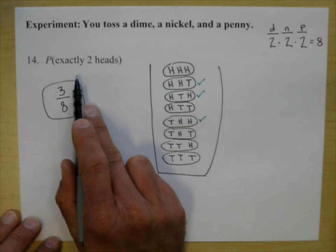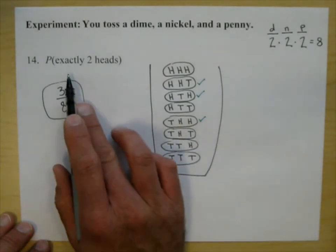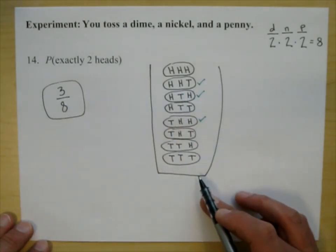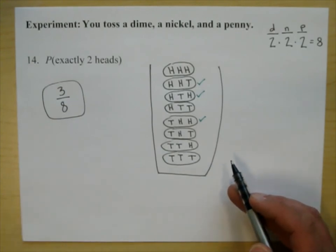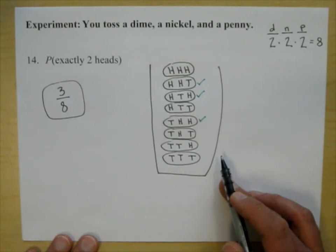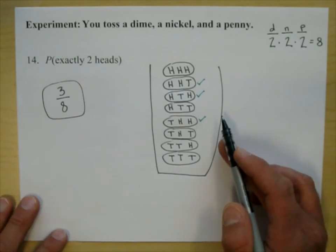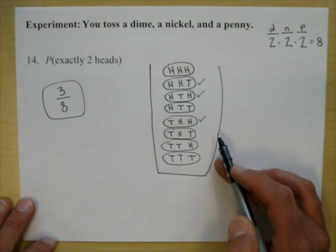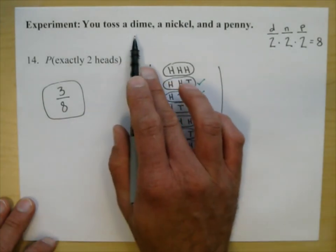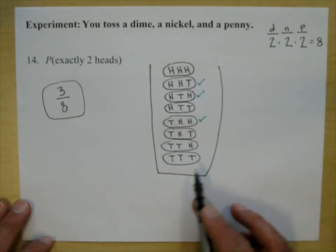Is this problem done in statistics classes? Absolutely. They would use combinations — three choose two divided by two to the third. But in this class, our approach is the simplest method. There's a time and place for formulas and combinations, and that's when numbers get really high, like tossing 20 coins. We're not doing that in homework or on the test, so this is good enough.